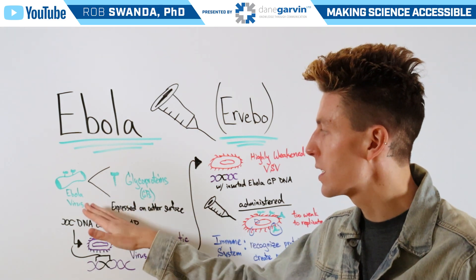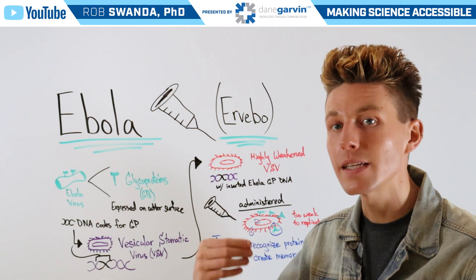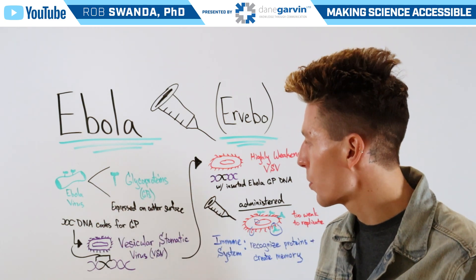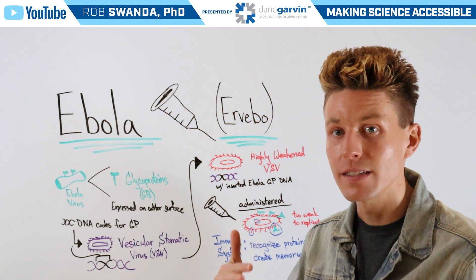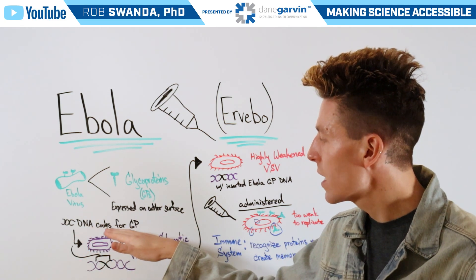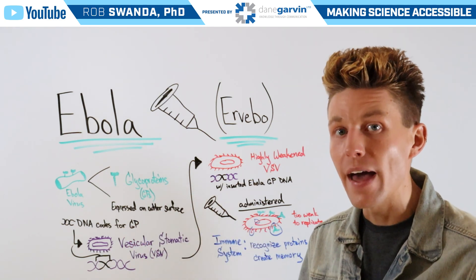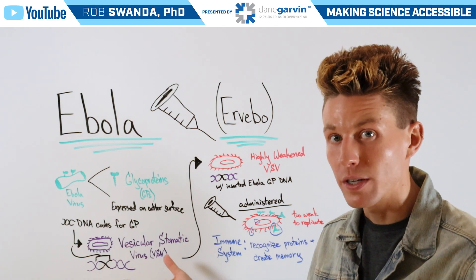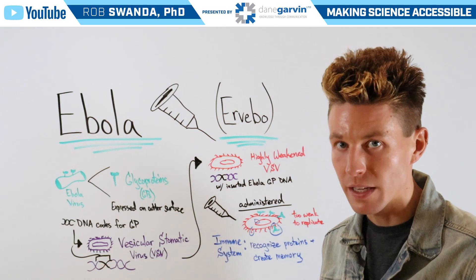Now, the Ebola virus is composed of a variety of different proteins, but one of those proteins sits on the outer membrane, known as the glycoprotein, or GP. We can take advantage of the fact that this is on the outer surface by extracting the DNA that's necessary to code for that glycoprotein, and then incorporating that into another DNA strand for a different virus, such as the vesicular stomatic virus, or VSV.